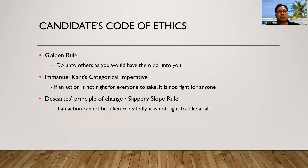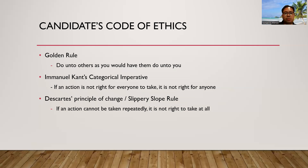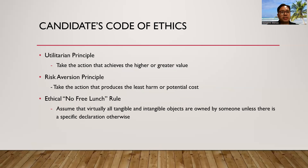Candidate codes of ethics. First is the golden rule: do unto others as you would have them do unto you. Second is Immanuel Kant's categorical imperative: if an action is not right for everyone to take, it is not right for anyone. Third is Descartes' principle of change, or the slippery slope rule: if an action cannot be taken repeatedly, it is not right to take at all. Fourth is the utilitarian principle: take the action that achieves the higher or greater value. Then the risk aversion principle: take the action that reduces the least harm or potential cost. Lastly is the ethical or no free lunch rule, which assumes that virtually all tangible and intangible objects are owned by someone unless there is a specific declaration otherwise.